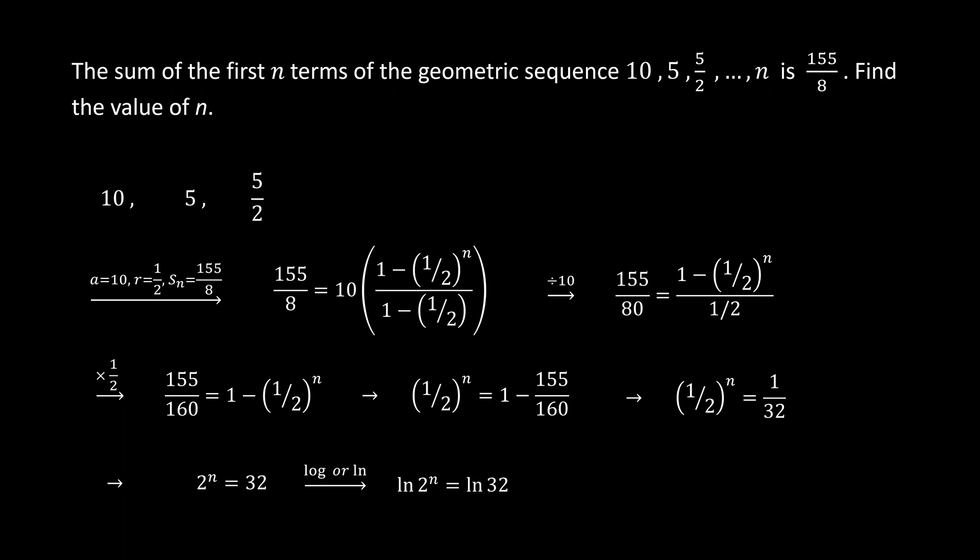We get ln(2^n) equals ln(32). Now n can be brought in front of ln, and by dividing both sides by ln(2), we isolate n to be ln(32) over ln(2).